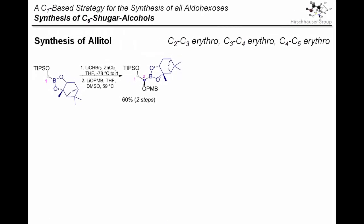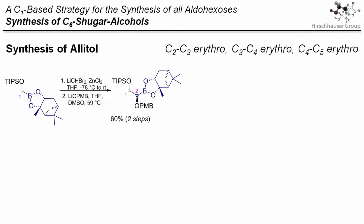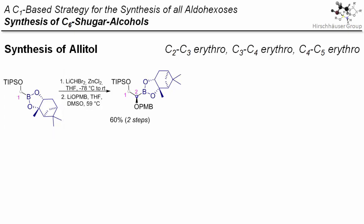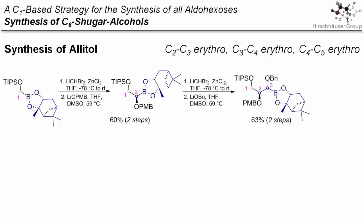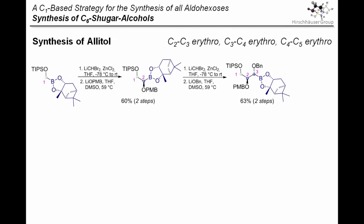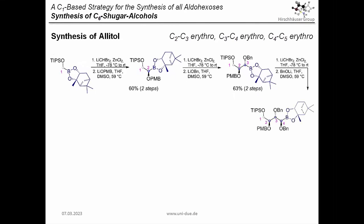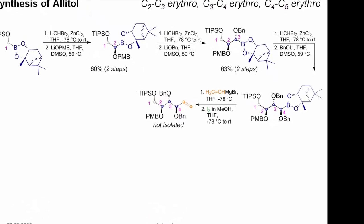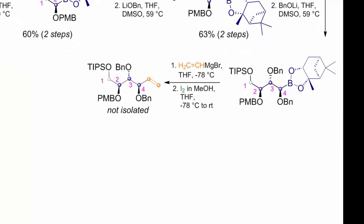Let's start by looking at our synthesis of alitol, in which all glycols are in an erythro configuration. To allow for addressing the different hydroxyl groups individually, we started with a silyl-protected C1 building block. Homologation and substitution with para-methoxybenzyl oxide introduced a second carbon atom with a PMB-protected hydroxyl group. Another homologation and substitution with benzyl alkoxide gave us this C3 building block. After the third homologation, we also chose to introduce another benzyl group — though other alkoxides could have been used here. We went with the second benzyl group for reasons of stereochemical assignment, which we will discuss a bit later.